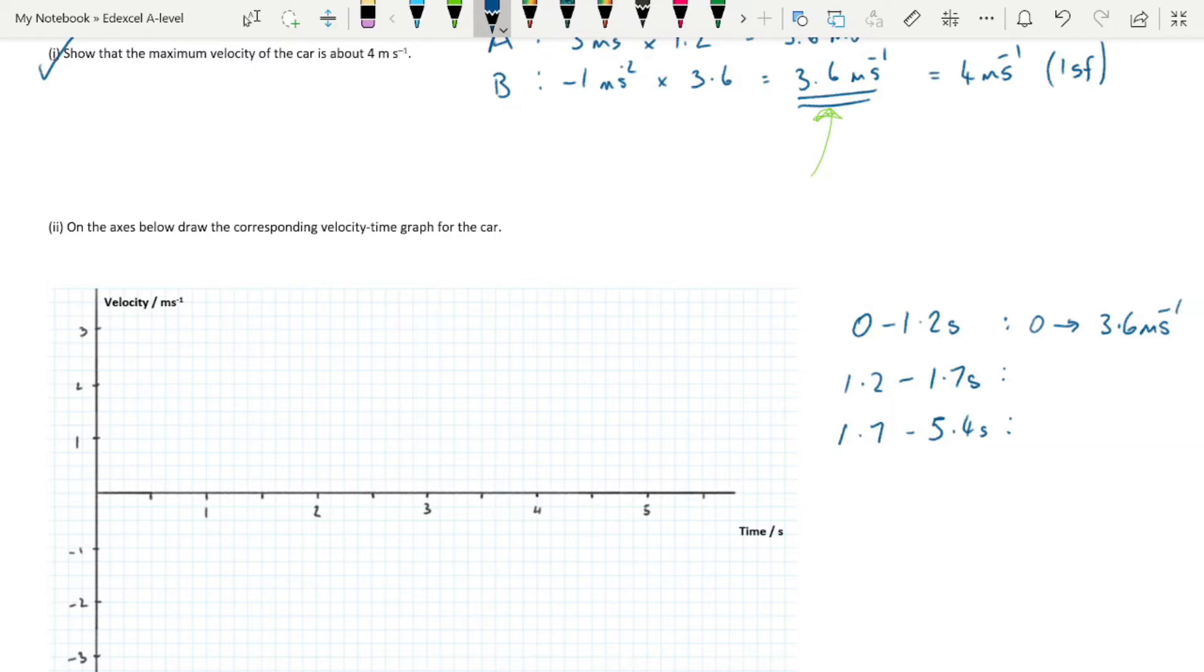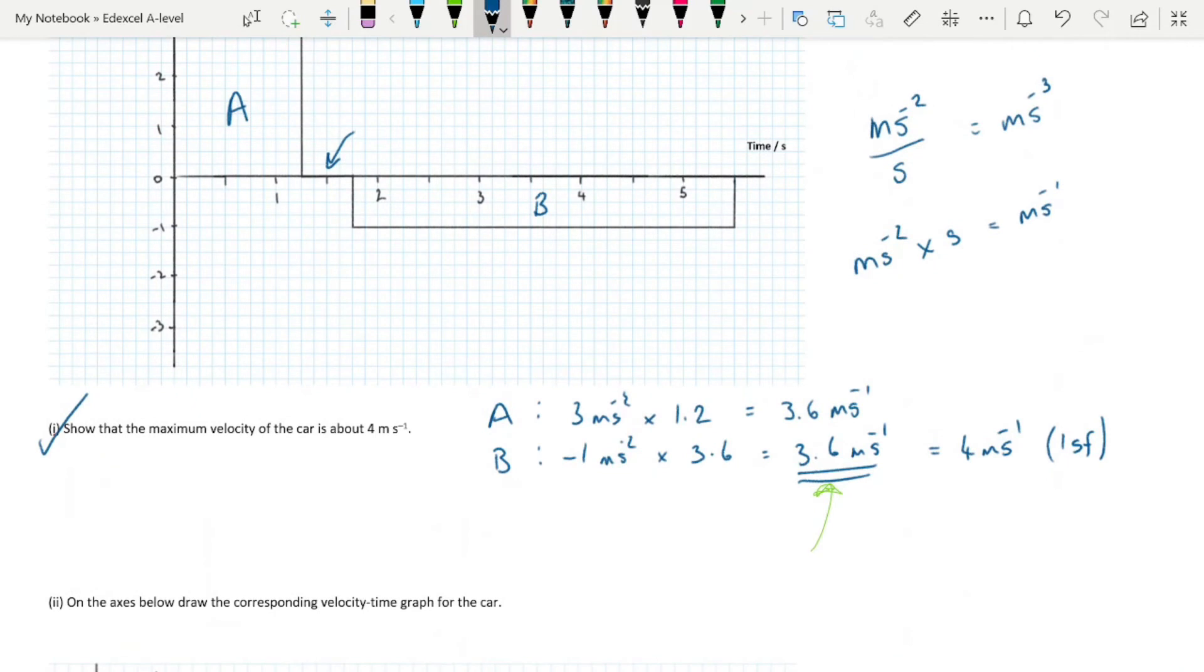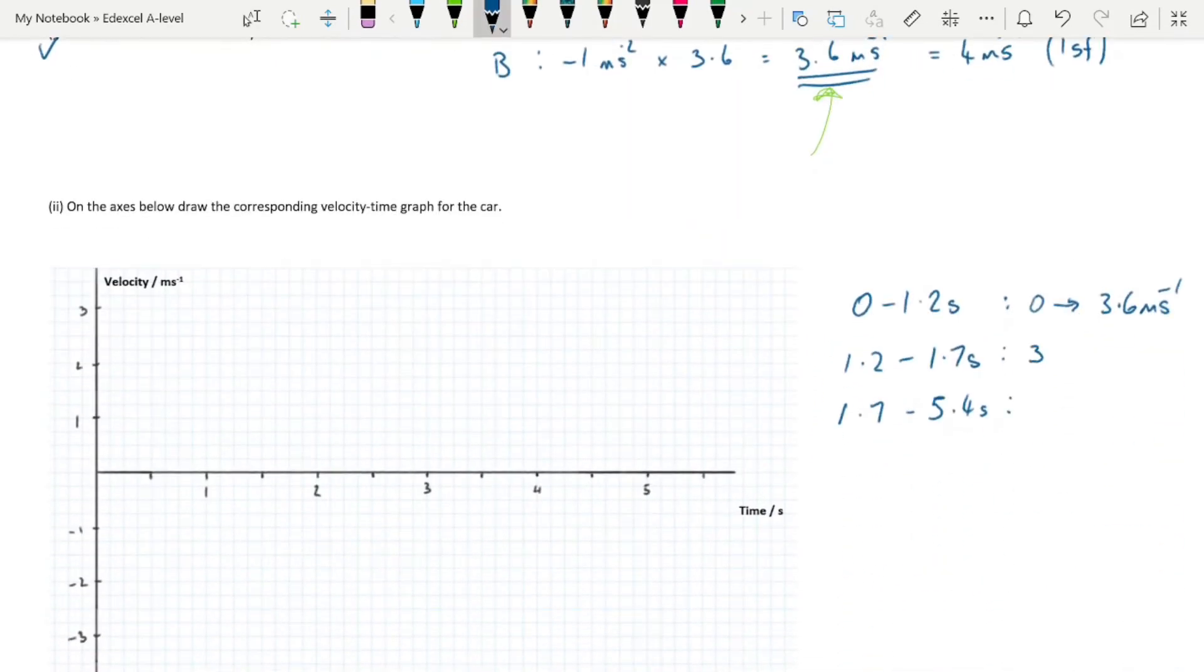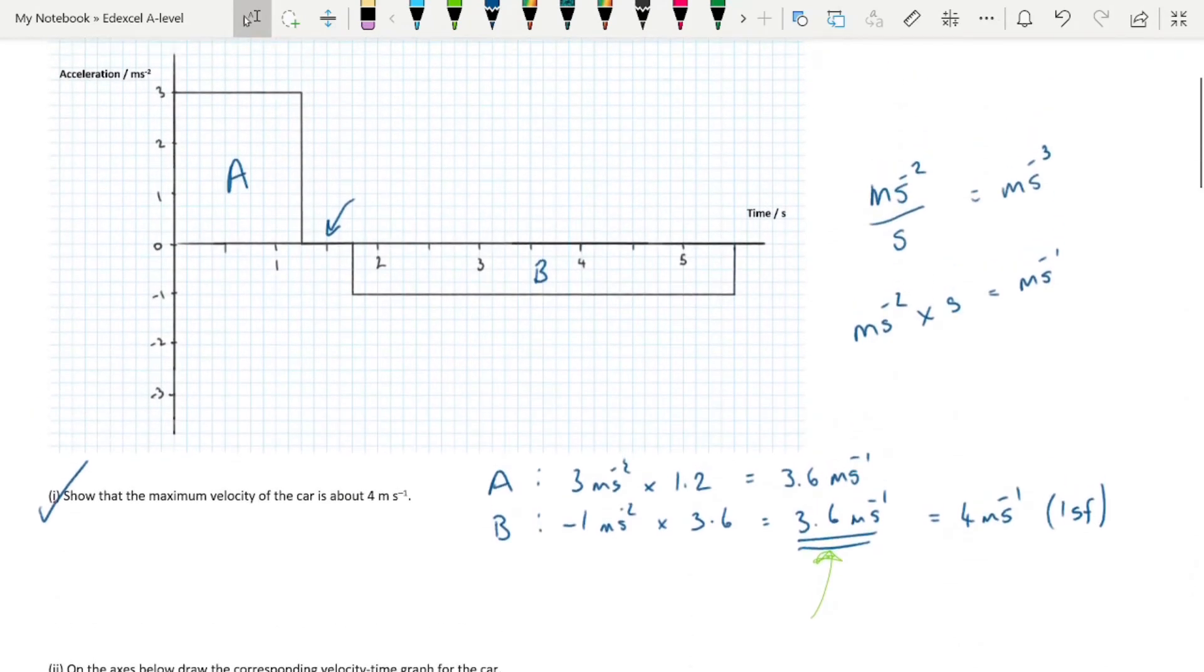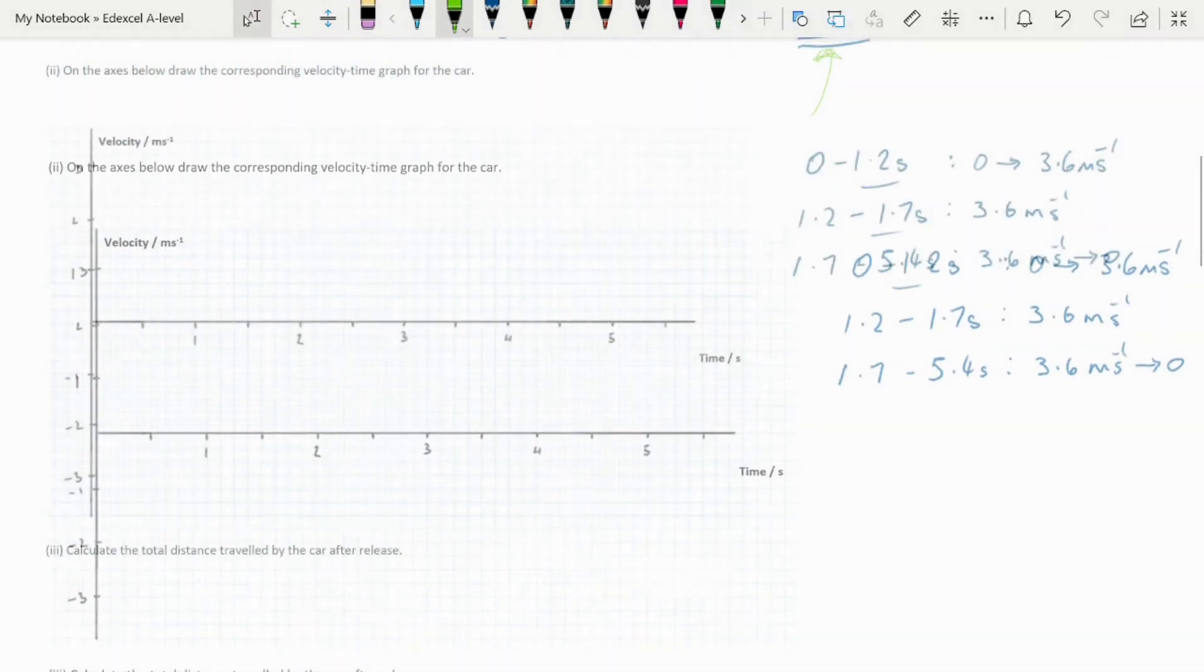Between 1.2 and 1.7 seconds, we have no acceleration. That does not mean that the velocity drops to 0. It just means that the velocity doesn't change for this time period. Between 1.7 and 5.4, we go from 3.6 down to 0. The other thing to note is that for each of these sections where the car is accelerating, parts A and B, we have a constant acceleration. That means we're going to have a constant gradient on our velocity-time graph.